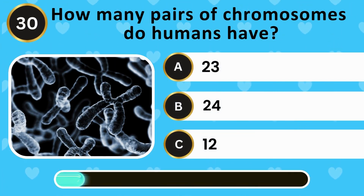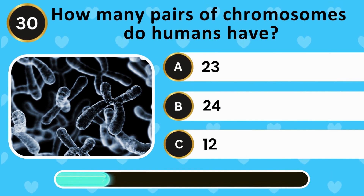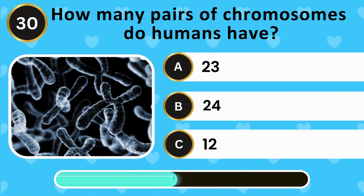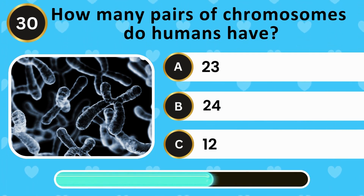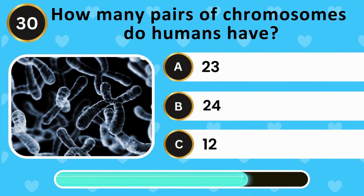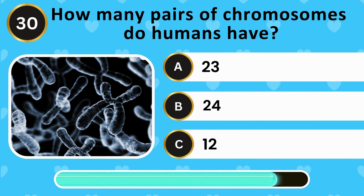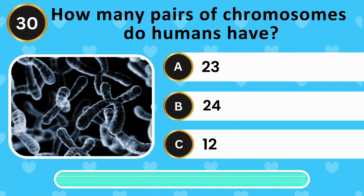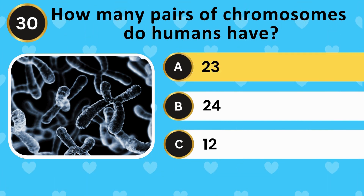How many pairs of chromosomes do humans have? 23, 24, 12. The answer is 23.